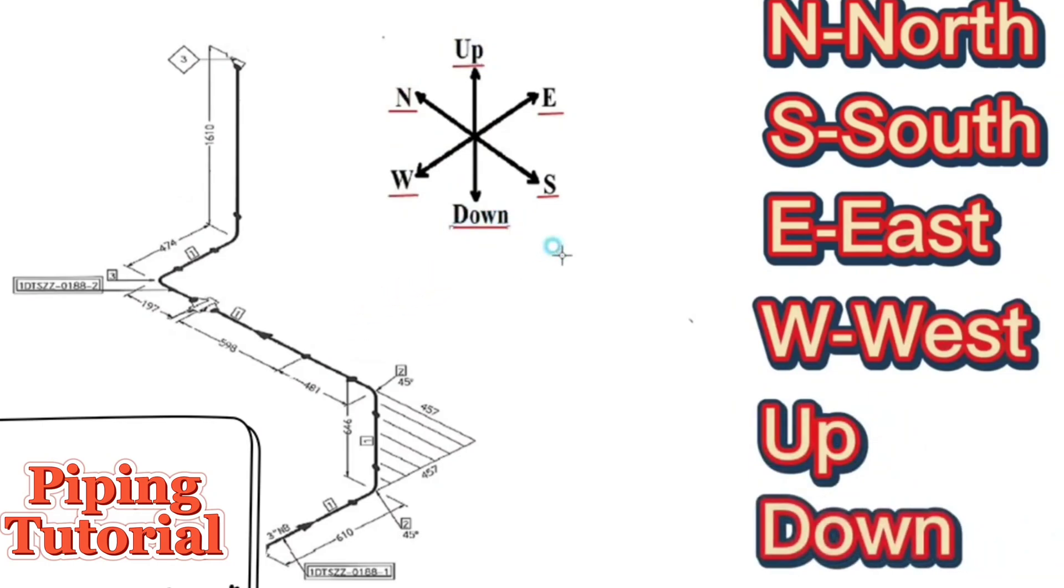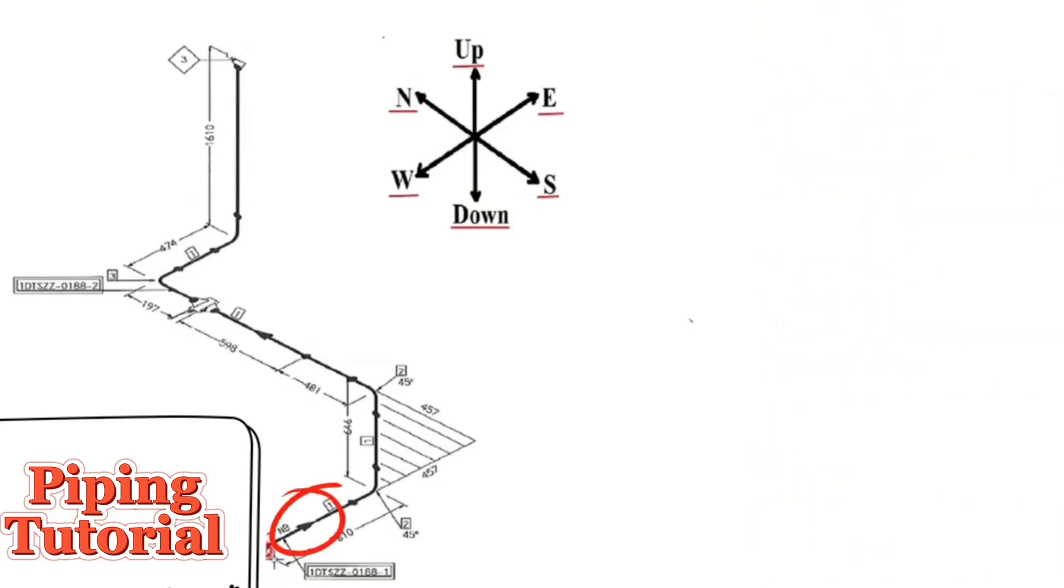By studying these directions we can easily read the pipe isometry. We will start reading the pipe isometric from this point because the direction of the arrow on the pipe drawing is in this direction.